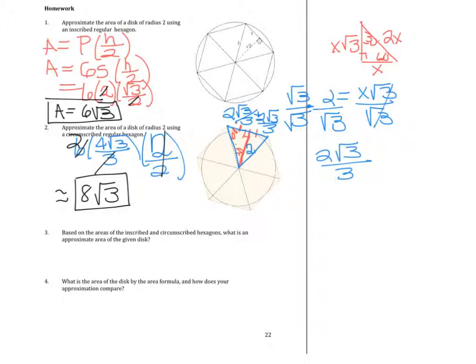Based on the areas of the inscribed and circumscribed hexagons, what is an approximate area of the given disk? If you remember back to the inequalities, the area of the inscribed hexagon is less than the actual area of the disk, which is less than the area of the circumscribed hexagon. Based on the areas we've just found, we're able to find the average of them.